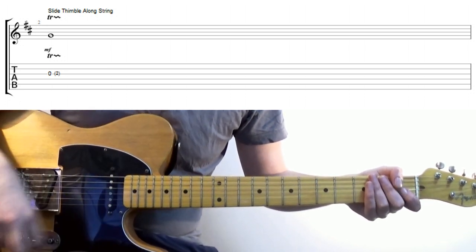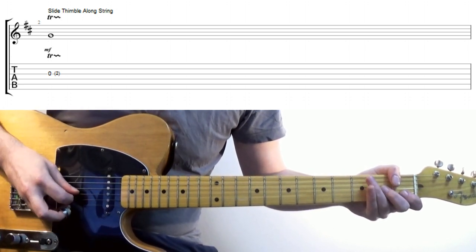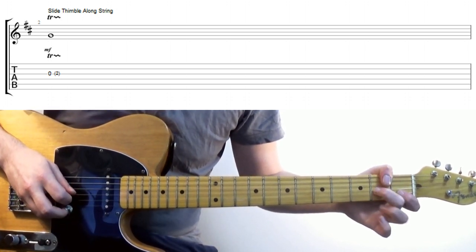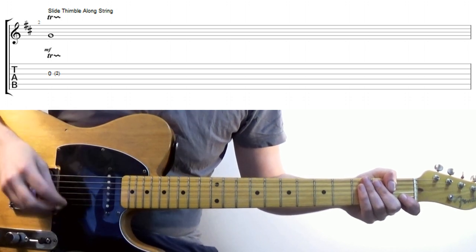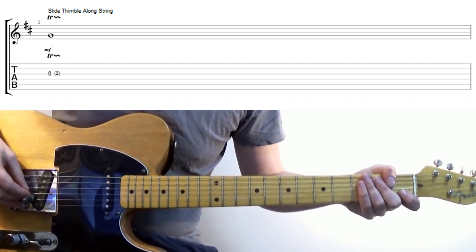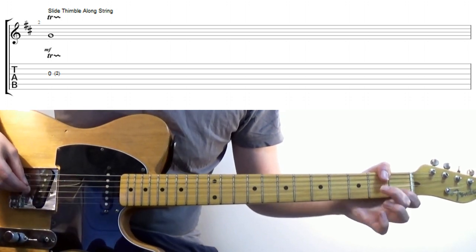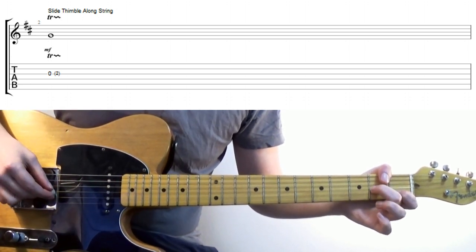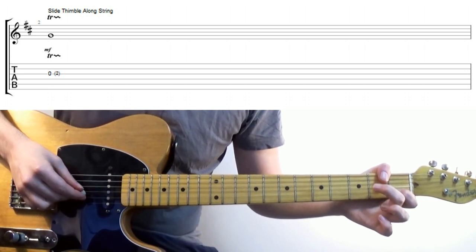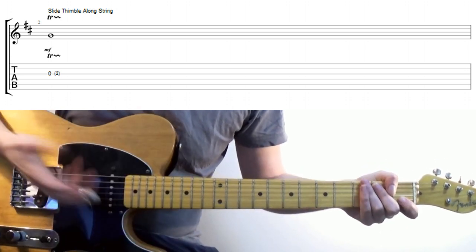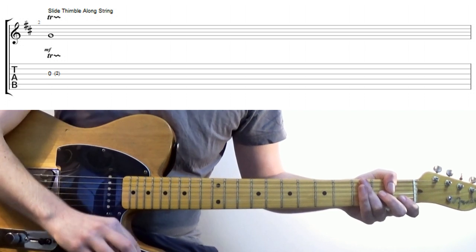You want to be on the neck pickup for this one, and trill the second fret to the open. Whilst trilling, put the thimble on the string, I'm using the G-string and slowly move it up towards the fretboard. I like to speed the trill up as I go for a bit of dynamics.